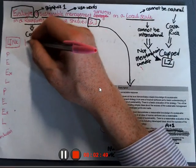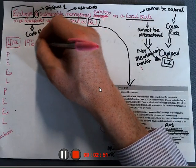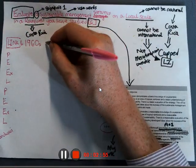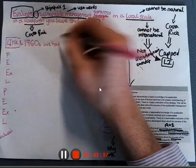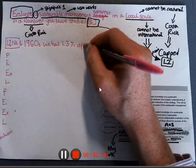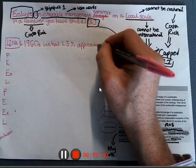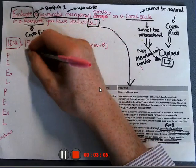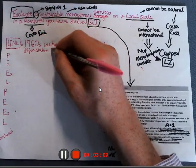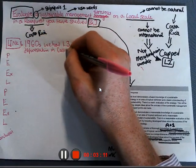You can say what we looked at today. In the 1960s, we had 1.3% approximately deforestation in Costa Rica.